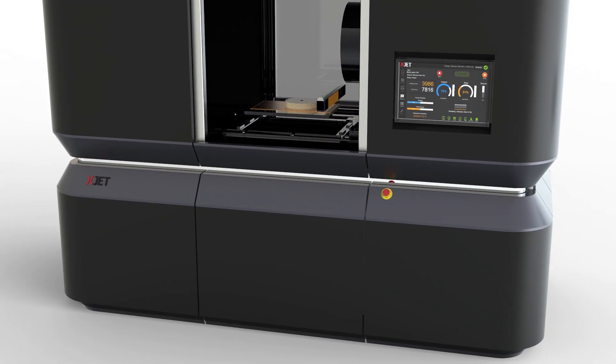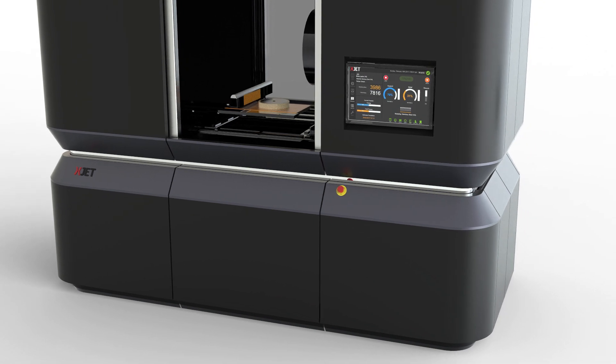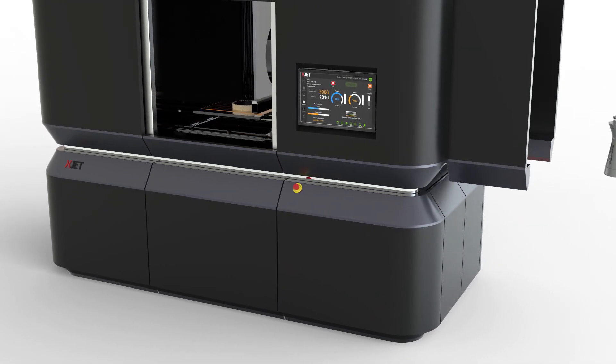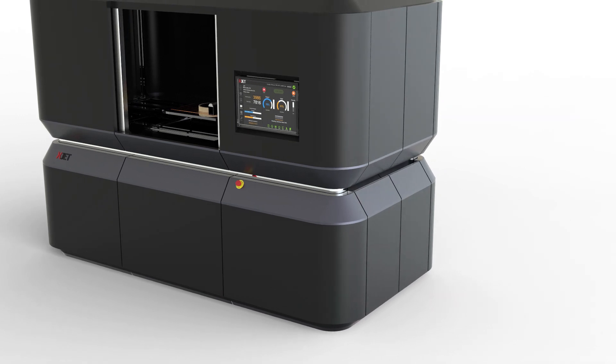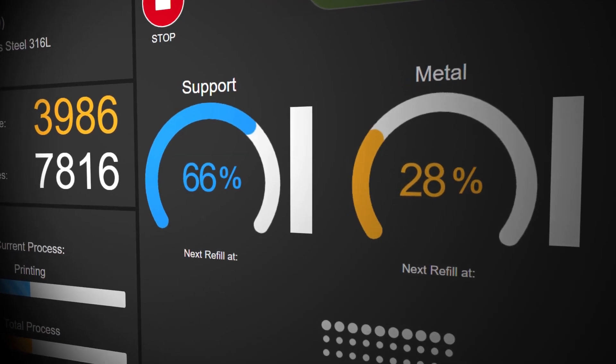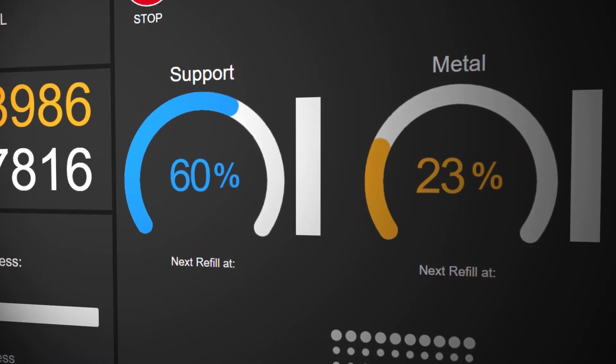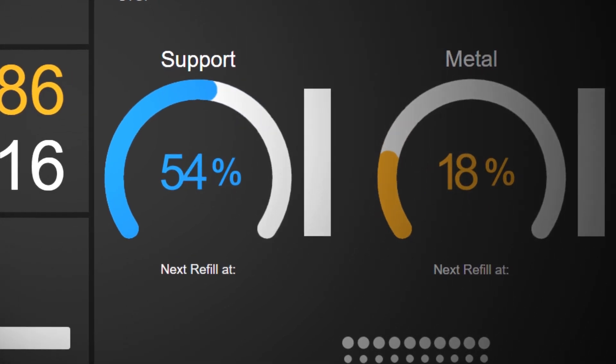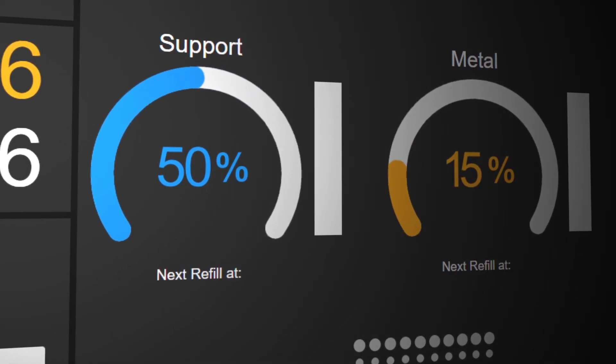The metal materials are packaged within specially adapted cartridges that are easily loaded by hand into the X-Jet system. Because there's no powder vat, X-Jet uses only the material required, saving space and eliminating the need for handling metal powders.